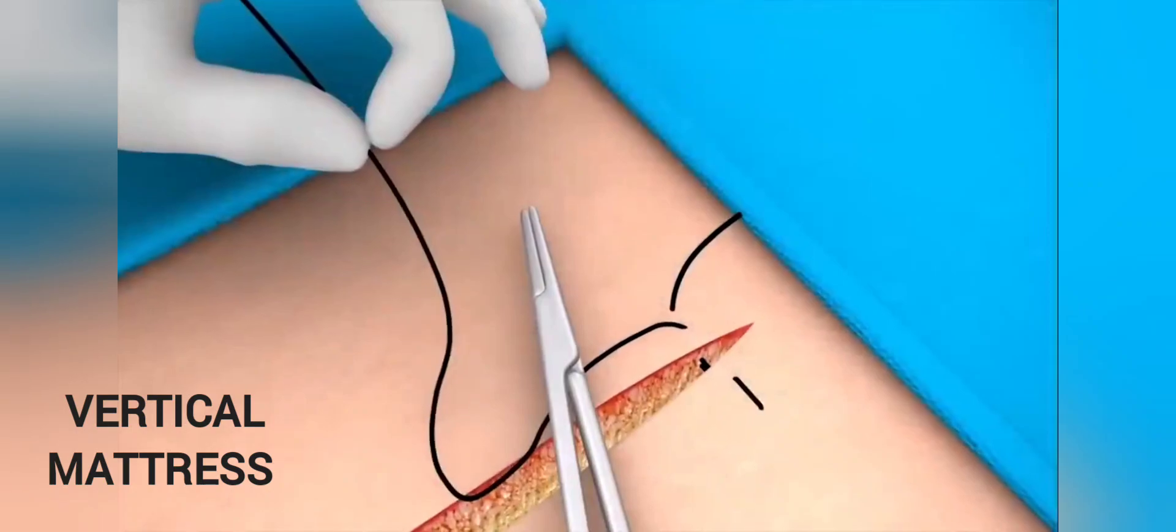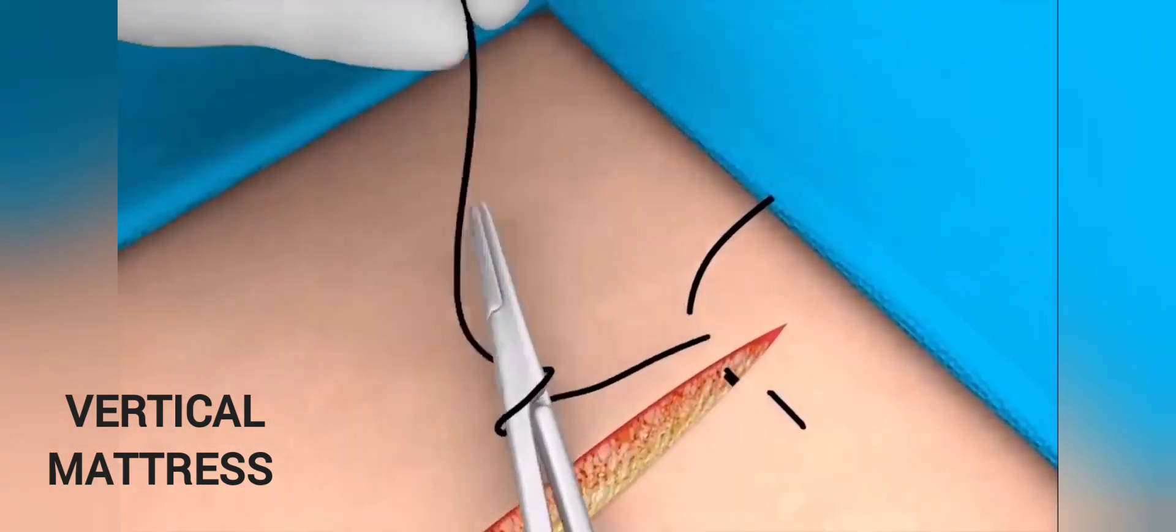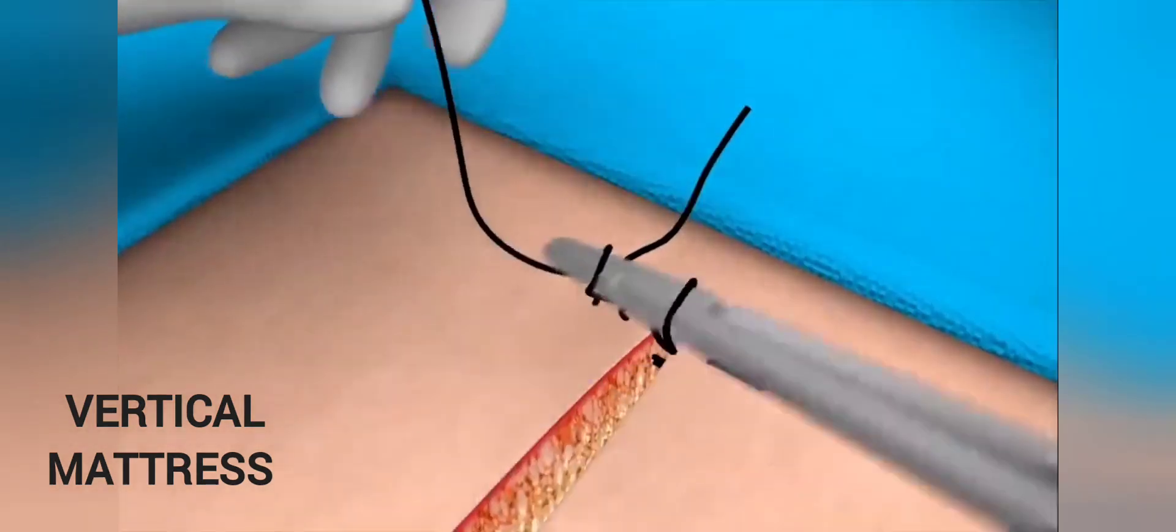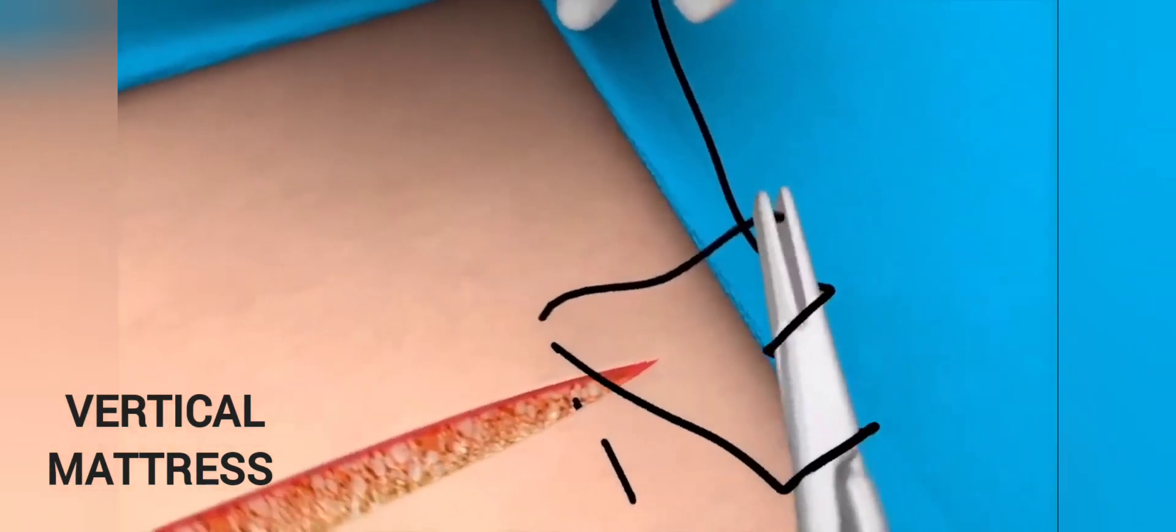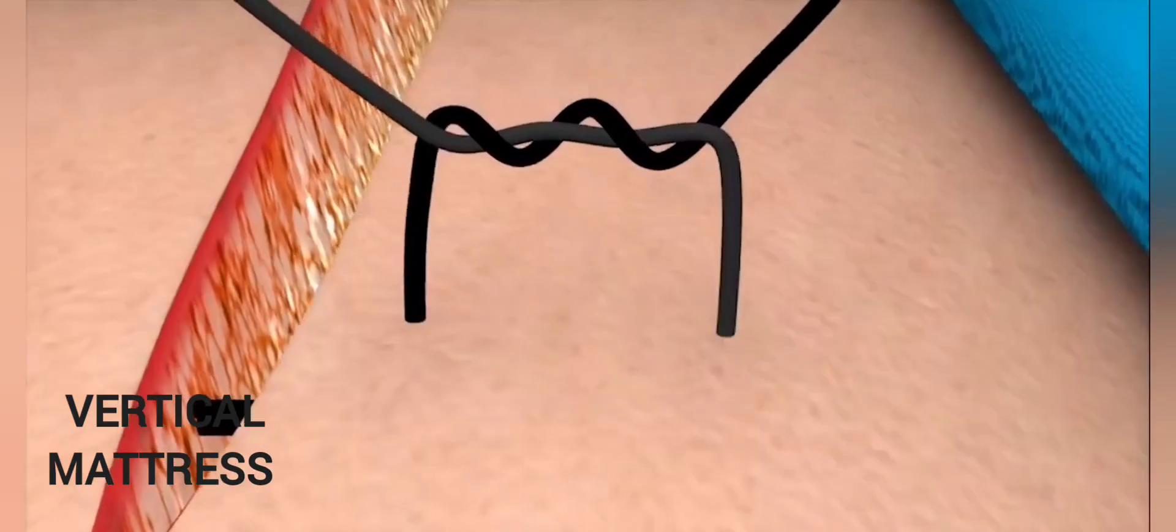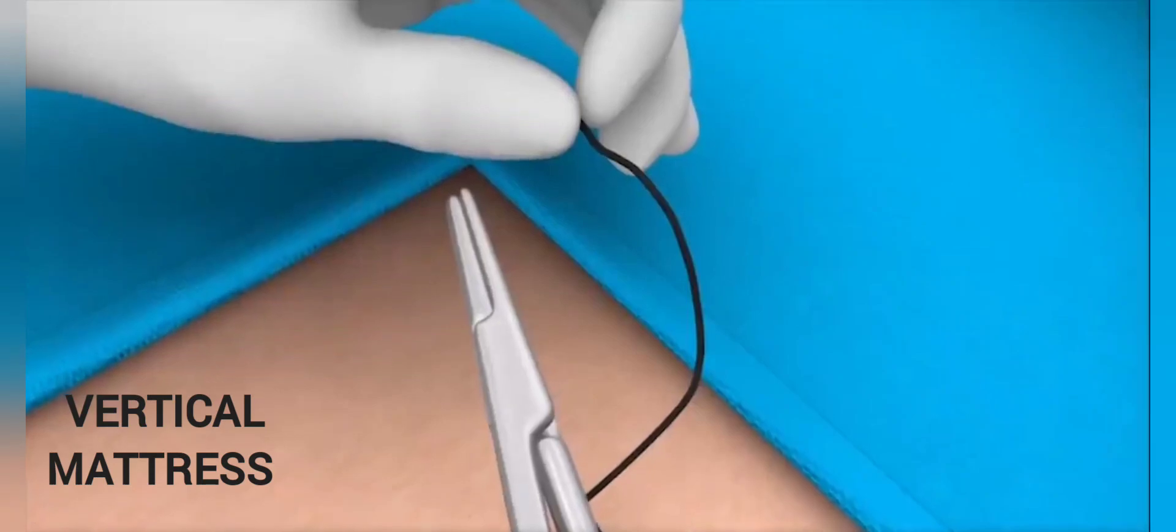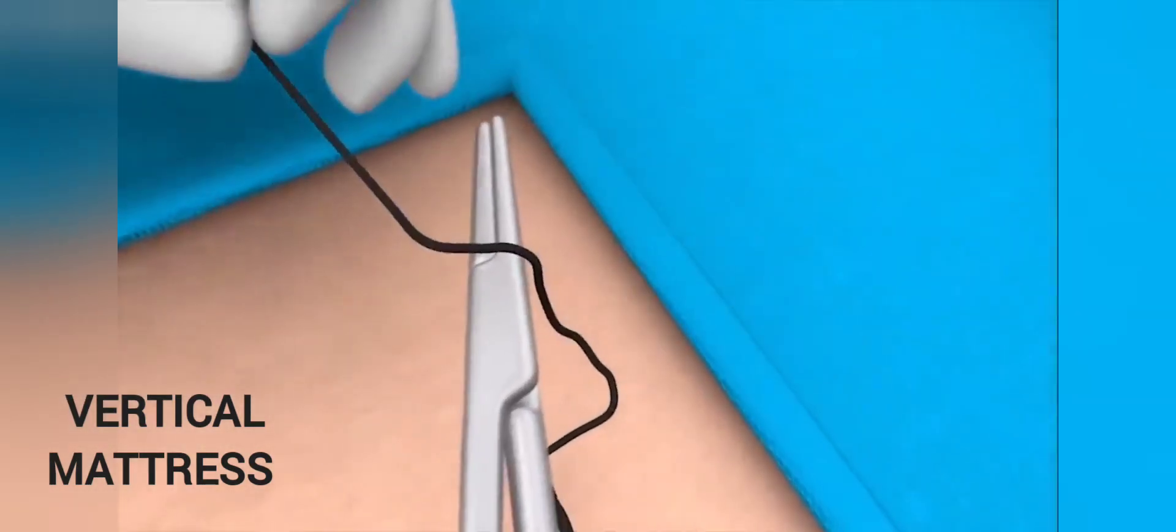When tying the knot, make a double forward throw first by wrapping the suture twice around the tip of the needle holder. Grasp the end of the suture with the needle holder and pull it through the loops as shown. This is then followed by a single backwards throw around the needle holder.